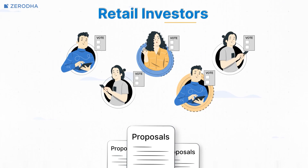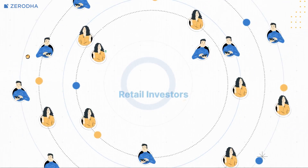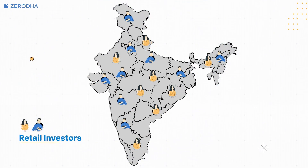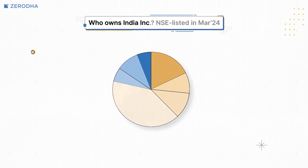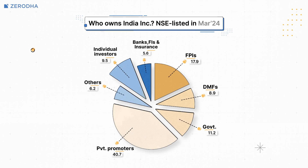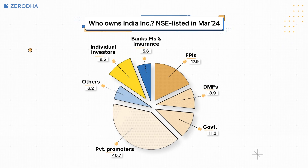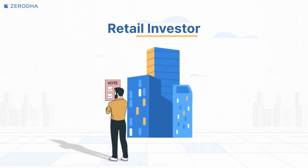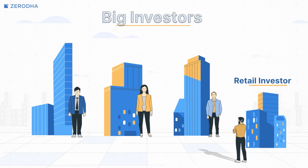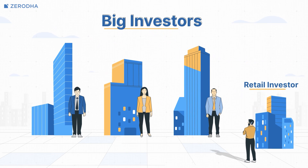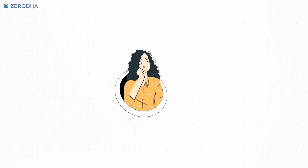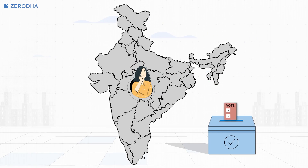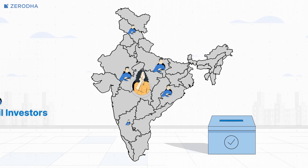However, very few retail investors vote. One reason for this is that retail investors are a small part of the Indian markets. As of March 2024, retail shareholdings in NSE listed companies was just 9.5%, and they think their vote doesn't matter as they are up against bigger institutions. You might think that in the grand scheme of things, your one vote may not make a difference.